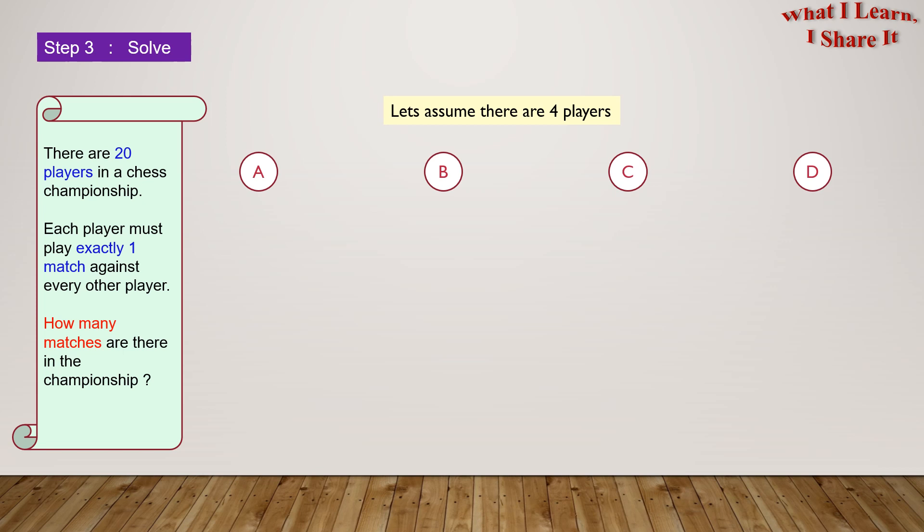Now let's assume another case where the number of players equals 4: A, B, C, and D. Player A can play with player B, C, and D. So here are the possible combinations: A-B, A-C, and A-D. So all these combinations are unique, so we accept them all.